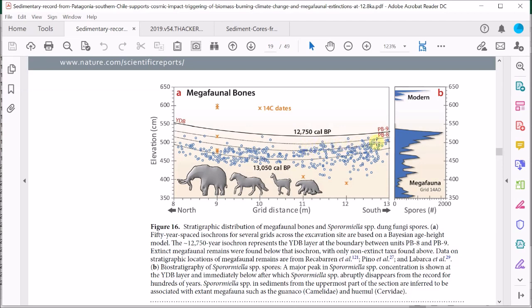Well, the authors also plot the abundance of a specific type of fungal spore that are associated with the presence of megafauna in this plot here at the side.